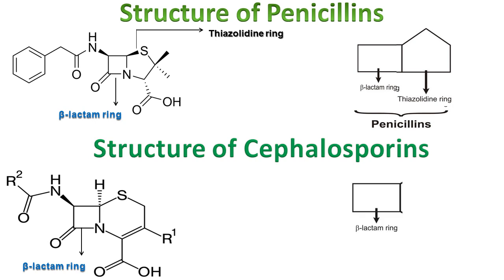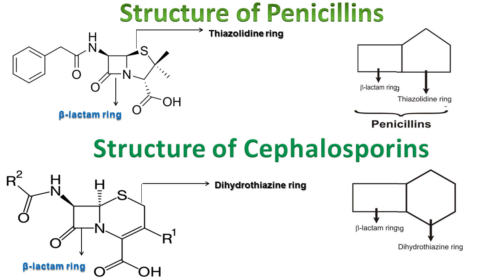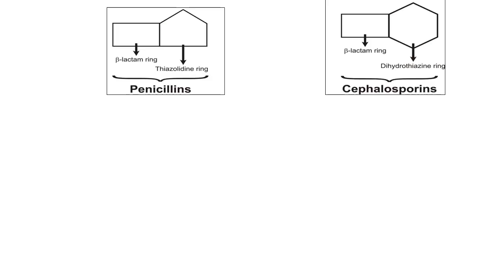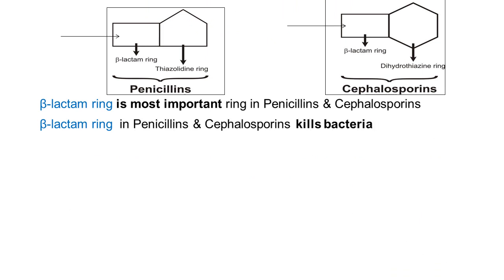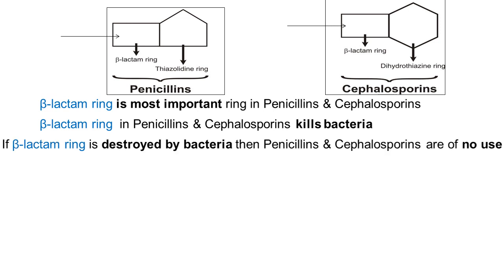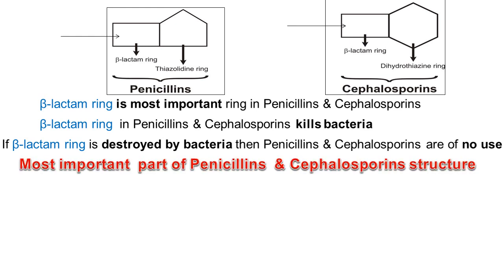If the four-membered beta-lactam ring is attached to a six-membered ring — the dihydrothiazine ring — this forms the antibiotic cephalosporins. The beta-lactam ring is the most important ring in both penicillins and cephalosporins. It is because of the beta-lactam ring that they can kill bacteria. If this beta-lactam ring is destroyed by bacteria, then penicillins and cephalosporins are of no use.